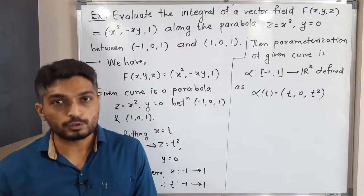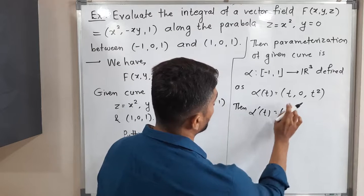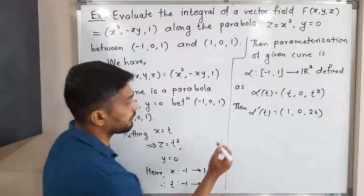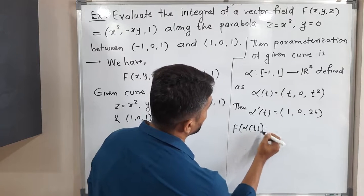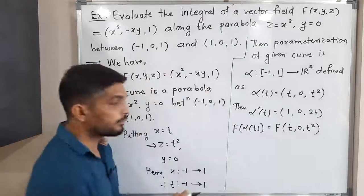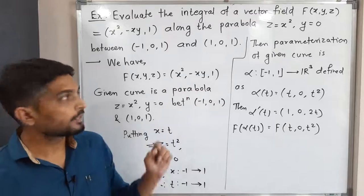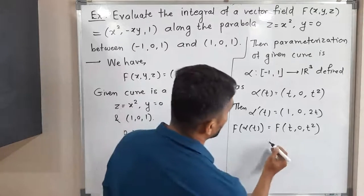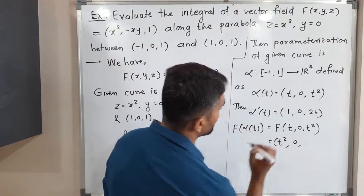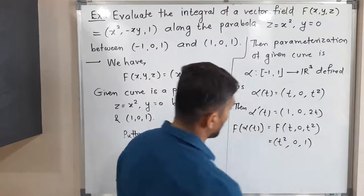After having the parametrization, we find α'(t) and F(α(t)). The derivative α'(t): derivative of t is 1, derivative of 0 is 0, derivative of t² is 2t — so α'(t) = (1, 0, 2t). For F(α(t)): substituting (t, 0, t²) into F gives x² = t², -xy = -(t)(0) = 0, and the last component is the constant 1. So F(α(t)) = (t², 0, 1).